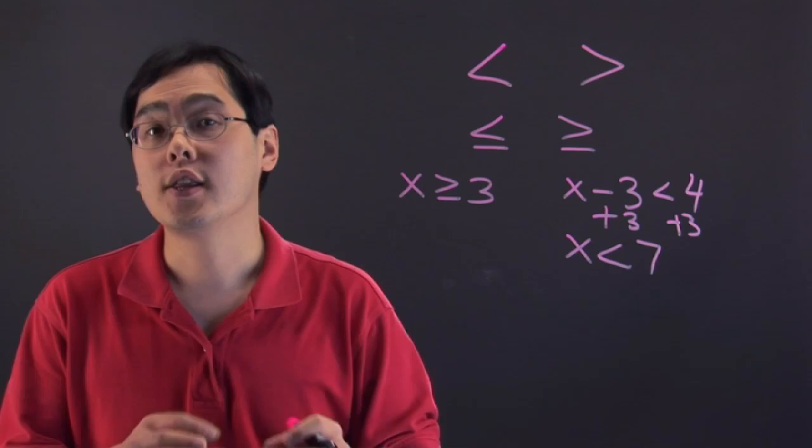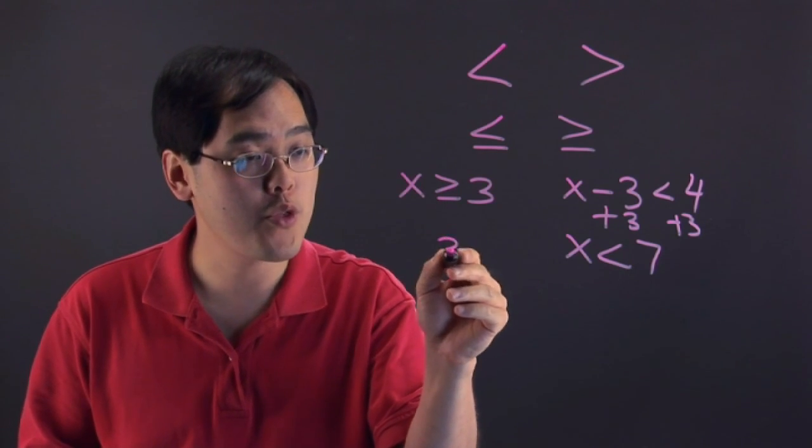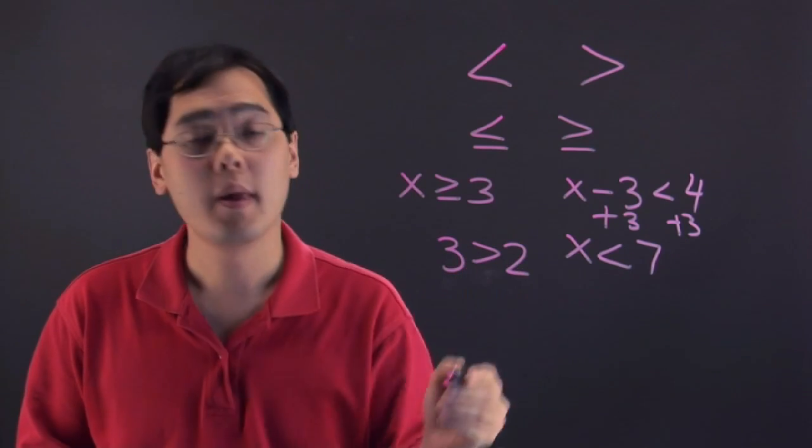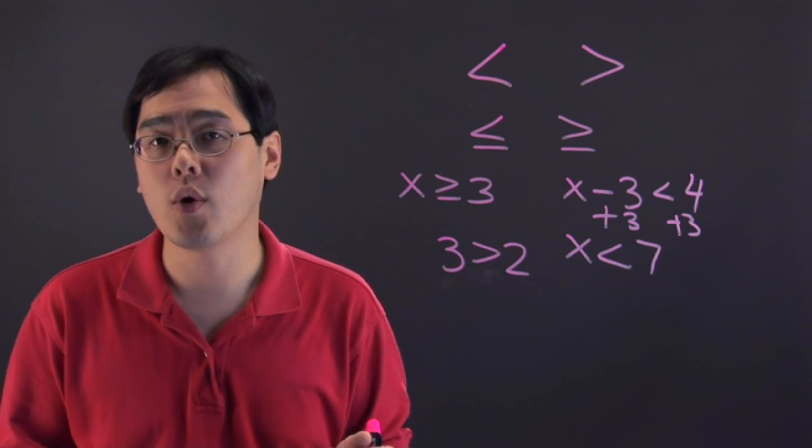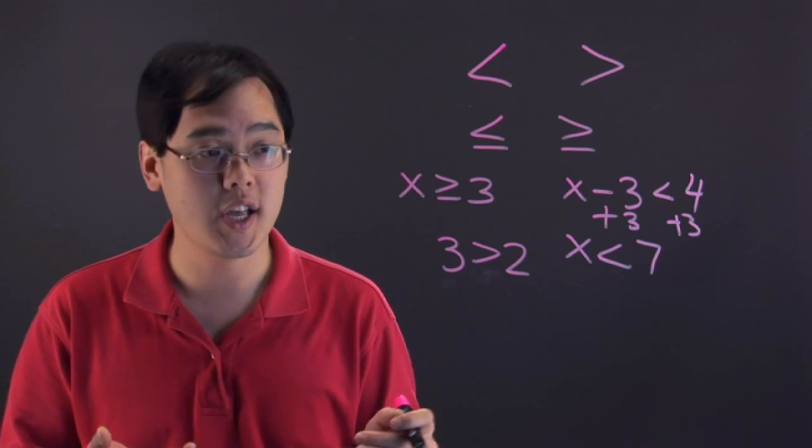The only thing you've got to think about for inequalities is, let's just say you know 3 is greater than 2. If you multiply both sides of an inequality or divide both sides by a negative number, you have to change the sign.